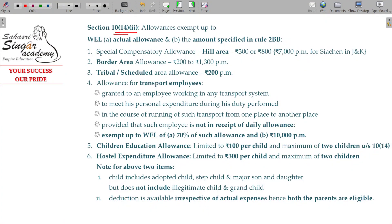Section 10, Class 14, Subclass 2 — allowances exempt up to the actual amount specified under Rule 2B, or the amount specified, whichever is lower. That will be called as exempted.